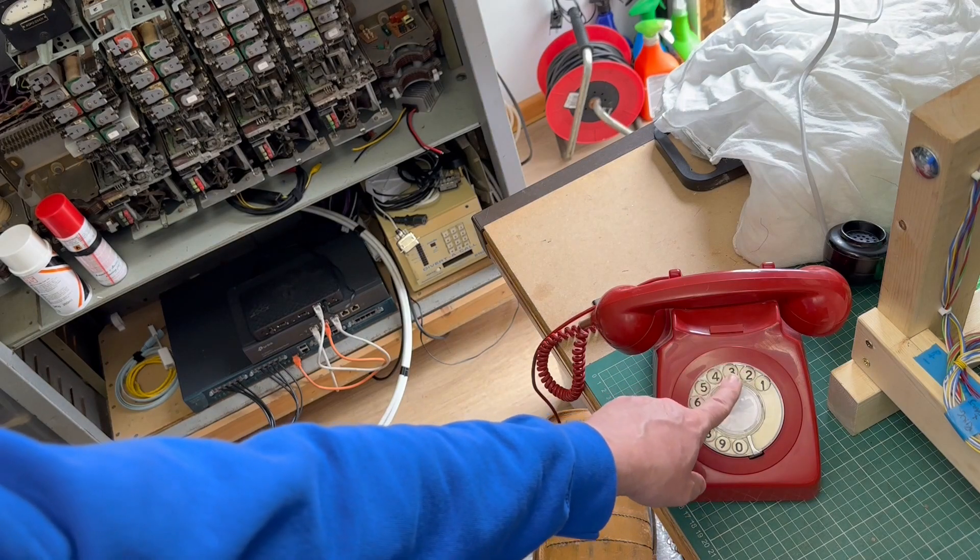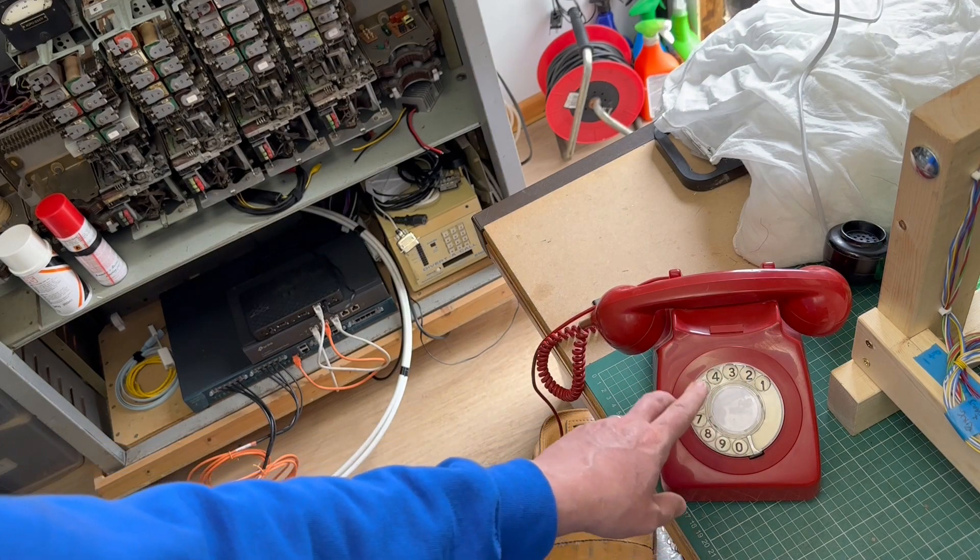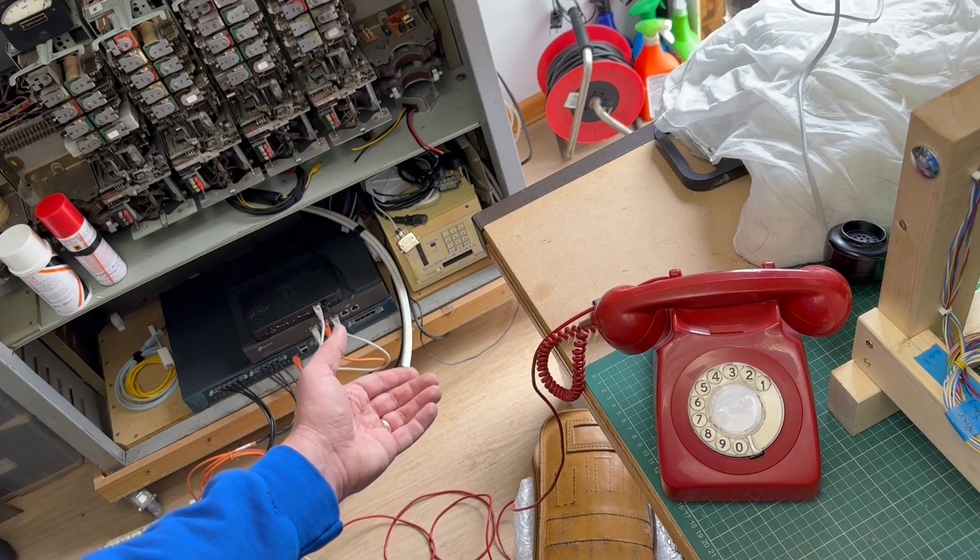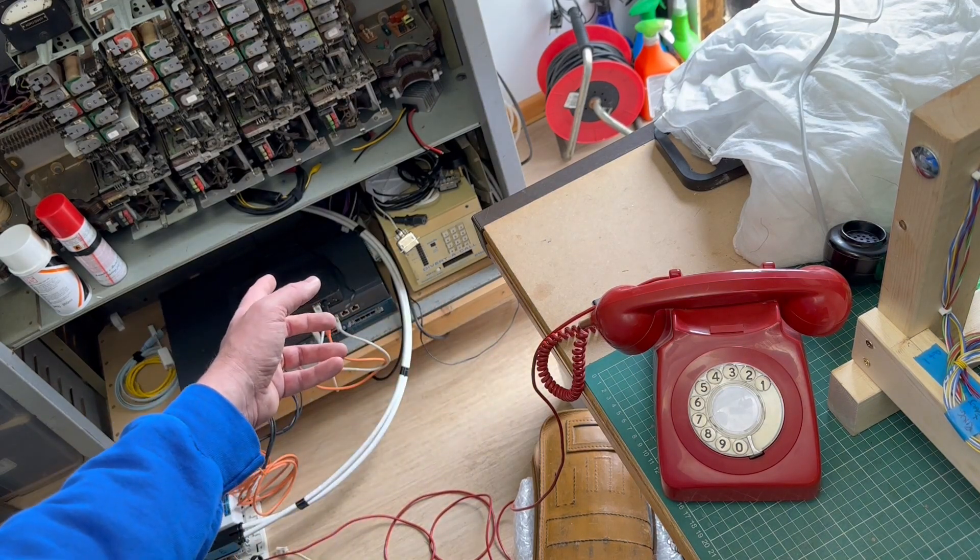To get to the tie line we dial the access code of 38. That will then give us dial tone from the Cisco. At that point we can dial phone numbers on the asterisk server.